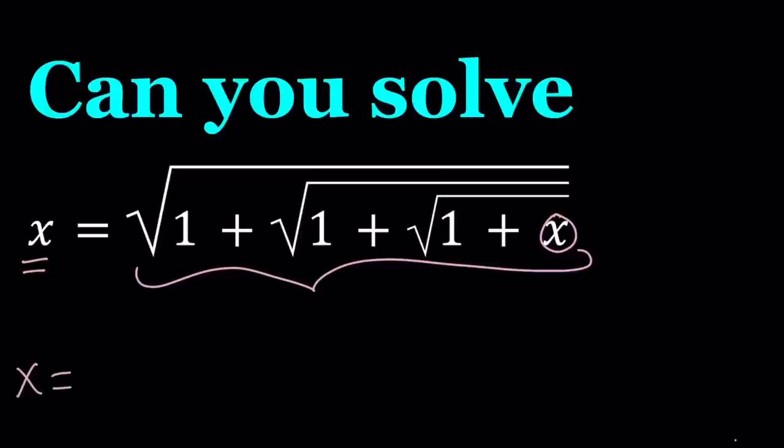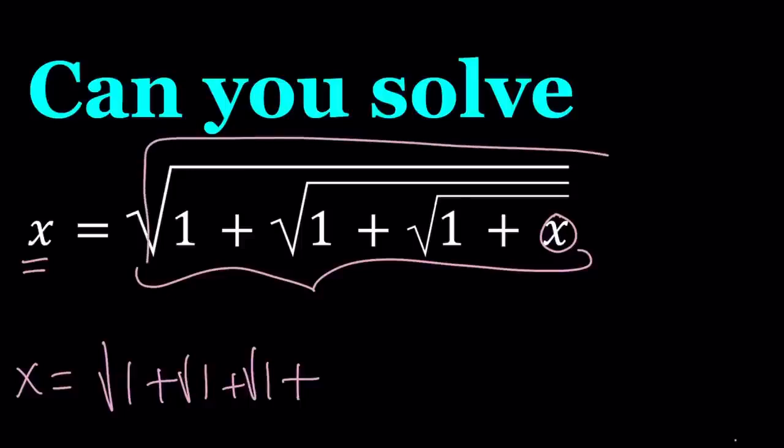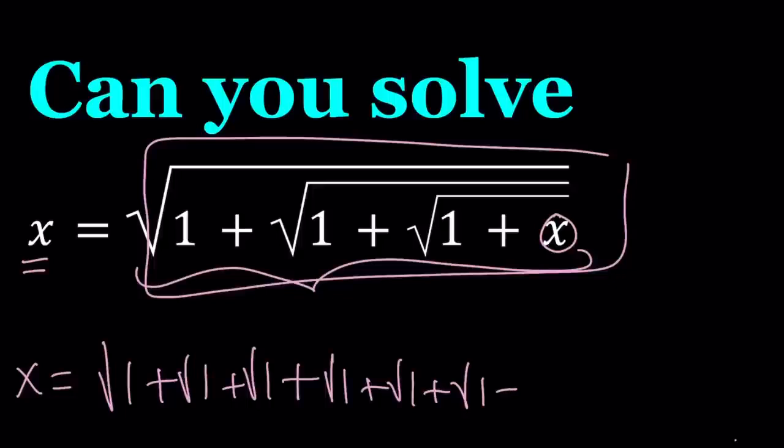x equals square root of 1 plus the square root of 1 plus the square root of 1 plus. Now x will be replaced with this whole thing and that's going to be the square root of 1 plus the square root of 1 plus the square root of 1 plus x. I hope that makes sense.